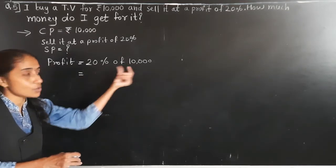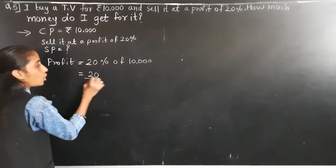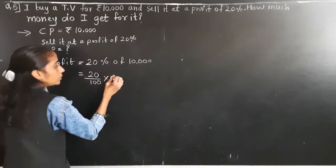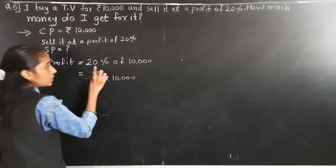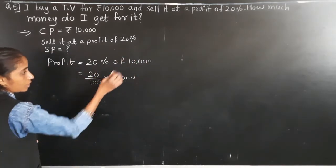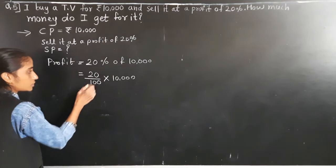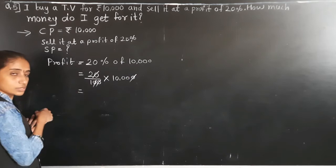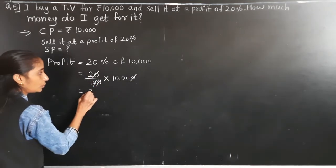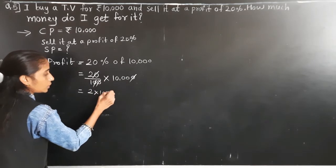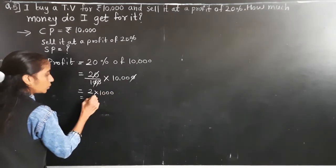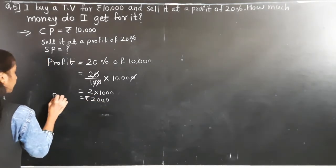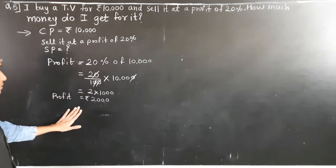So 20% of 10,000 means 20 upon 100 multiplied by 10,000. The zeros cancel — 2 into 1,000 — so we get rupees 2,000 profit.